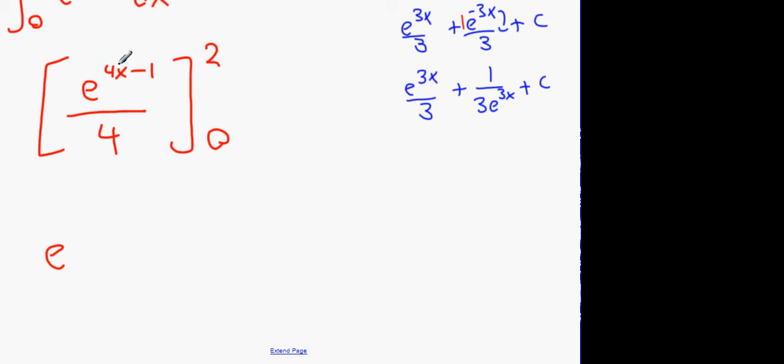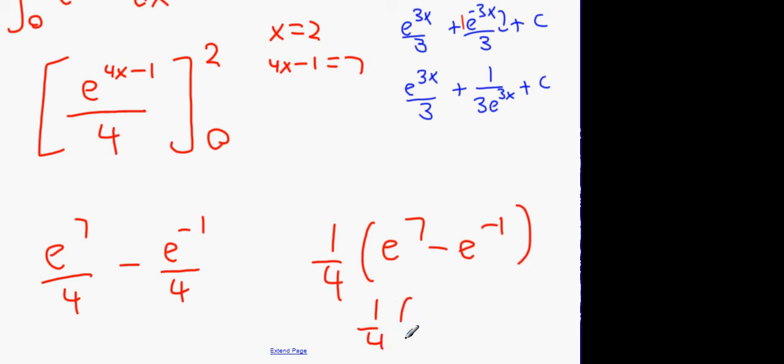So, we're going to get e to the power of, what is 4x minus 1? If x is 2, what's 4x minus 1? 7. So, it's going to be e to the 7 over 4 minus e to the minus 1 over 4. Now, what these guys did was, they didn't do anything else. They just took out a quarter and they left it as e to the 7 minus e to the minus 1. And then, you can say it's a quarter, e to the 7, minus 1 over e. All of them are the same answer. They're just written three different ways. They're all good answers.